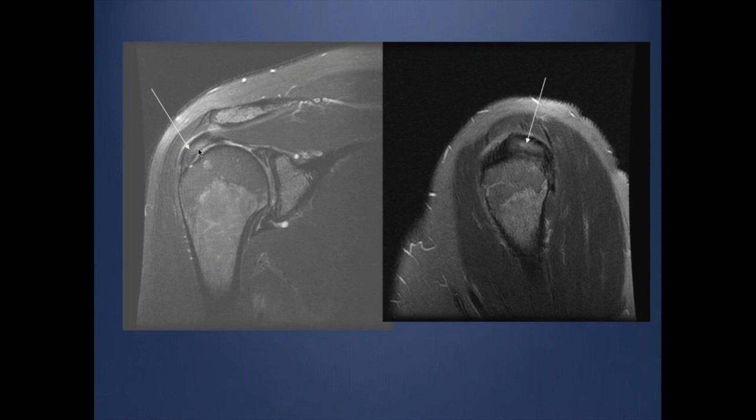This is because with low TE, we know we might have a magic angle artifact, particularly with a tendon that changes direction.